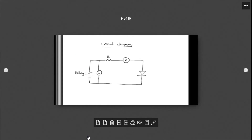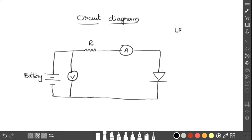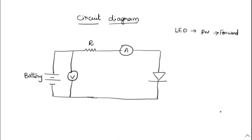Now we will see the circuit diagram required for this experiment. For the LED experiment, the PN junction should be forward biased. Forward biasing means the positive terminal of the battery should be connected to the P-type and the negative terminal should be connected to the N-type semiconductor. For better understanding, please watch the video on PN junction forward and reverse biasing — the link is in the description box.